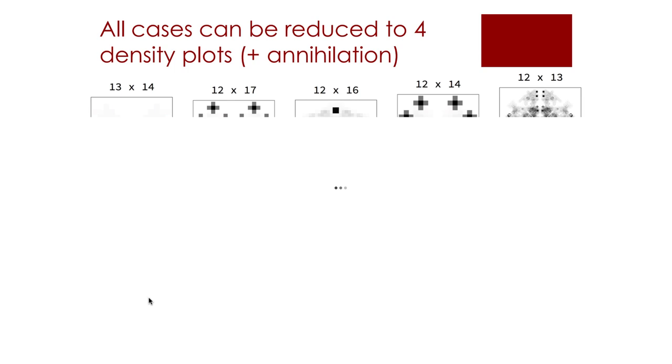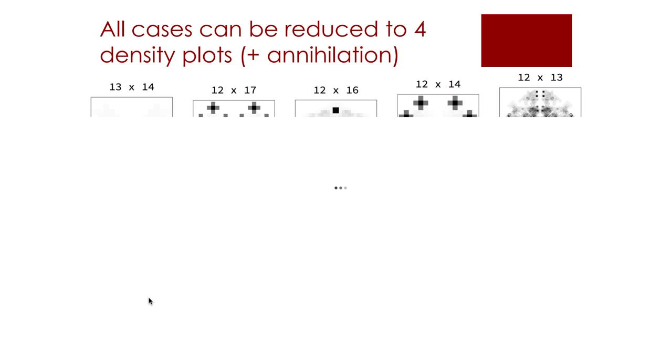At the end, the algorithmic dynamics of all cases can be aggregated and a clear pattern emerges. There are basically 3 types of collisions among particles of up to 4 gliders. Some produce more diversity of other particles and others decay. In both density plots showing the attractors and basins of attraction and plots of the algorithmic dynamics can be witnessed. We will see how we can come from tracking particles and characterising events to reconstructing the dynamics of them by using algorithmic information dynamics.